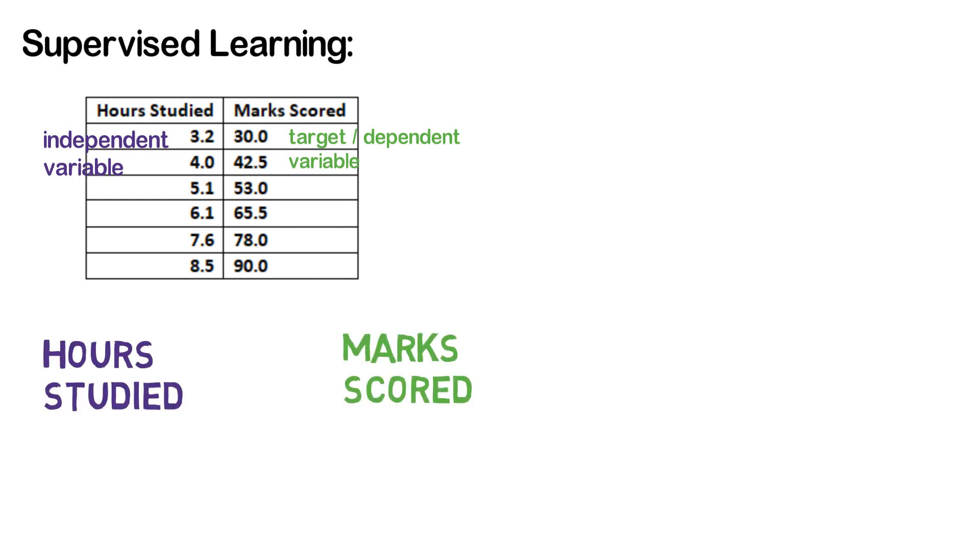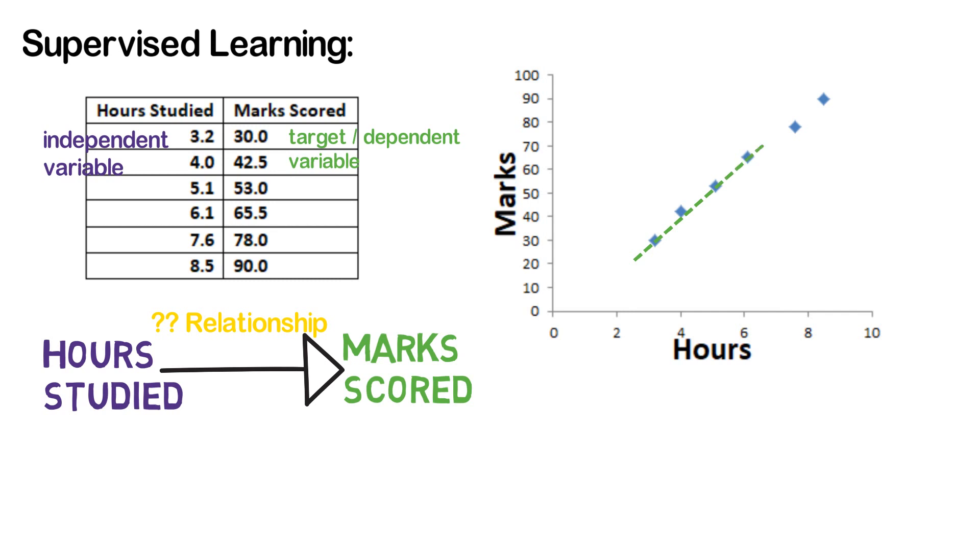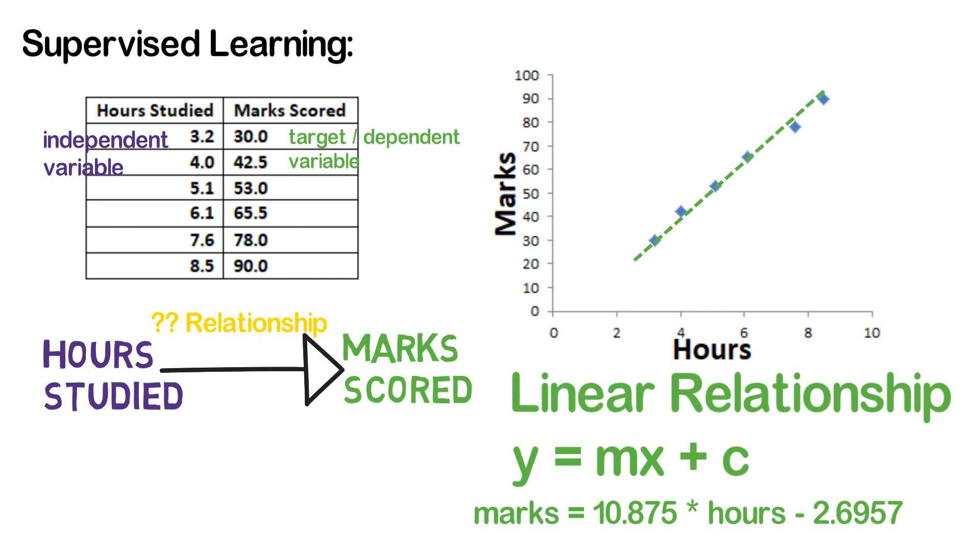We are required to find what kind of relationship exists between the hours studied and marks scored. If we plot the given data on the graph, we can see that the marks scored increases as the number of hours studied increases. Also, we can see that there is a linear relationship between the input and the target variable. Thus the given data has a linear relationship which is of the form y equals mx plus c.